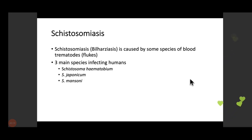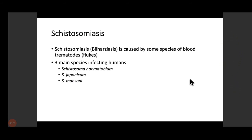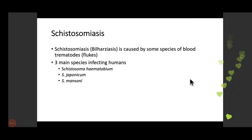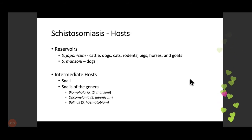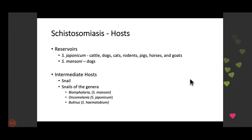The third parasite group is schistosomiasis, also called bilharziasis, caused by species of blood flukes (trematodes). There are seven species that infect humans, but three are most common: Schistosoma mansoni, Schistosoma haematobium, and Schistosoma japonicum. Trematodes are different from other helminths as they have multiple reservoirs and intermediate hosts. For Schistosoma japonicum, reservoirs include cattle, dogs, cats, and rodents; for Schistosoma mansoni, dogs serve as reservoir.